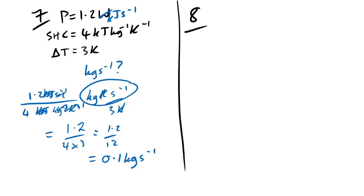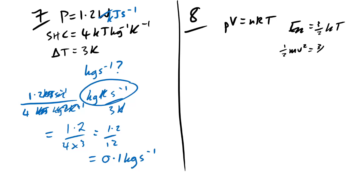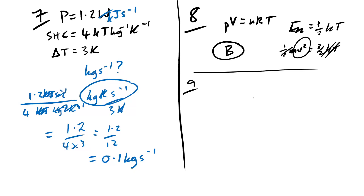Question 8: gas with volume V has RMS speed U at temperature T. If temperature is kept constant but volume is halved, using EK = (3/2)kT — if temperature stays the same, U stays the same. This is a trick question: the speed doesn't change. Question 9: the classic constant-volume heating graph. Temperature is on the x-axis in °C (not Kelvin, since the line doesn't pass through origin), and pressure is on the y-axis. Answer is B.